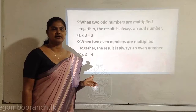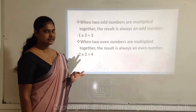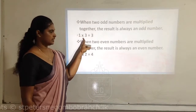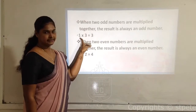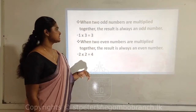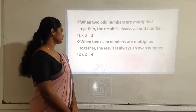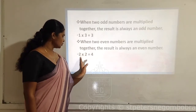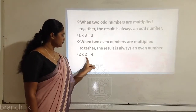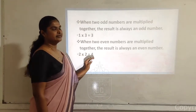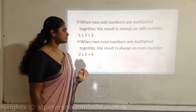We were discussing addition and subtraction with odd and even numbers. Now we are going to consider multiplication. Take 1 times 3: 1 is an odd number and 3 is also an odd number. When you multiply an odd number by another odd number, the result will always be an odd number. When two odd numbers are multiplied together, the result is always an odd number. Next, 2 times 2: 2 is an even number. When you multiply two even numbers together, the answer always becomes an even number. When two even numbers are multiplied together, the result is always an even number.